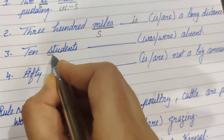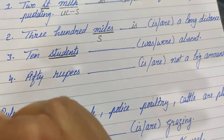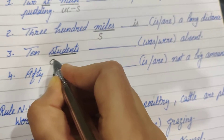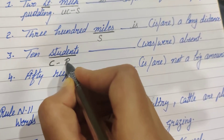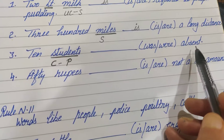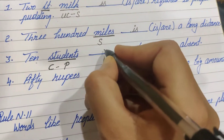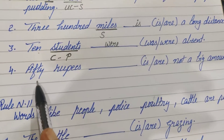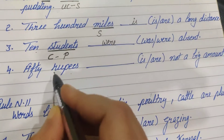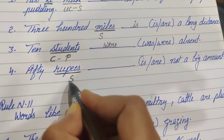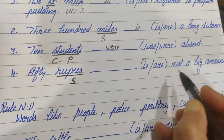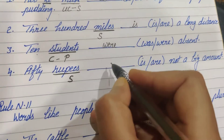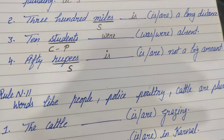'10 students' — the noun 'students' is countable, so it becomes plural: 10 students were absent. '50 rupees' is a unit of money, so it remains singular: 50 rupees is not a big amount.